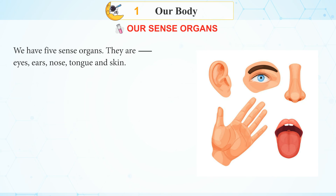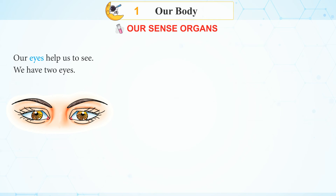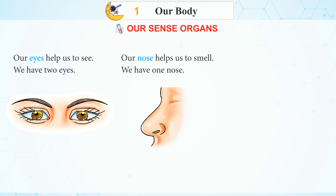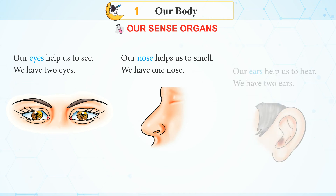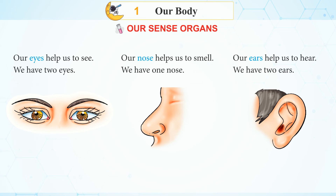We have five sense organs. They are eyes, ears, nose, tongue, and skin. Our eyes help us to see — we have two eyes. Our nose helps us to smell — we have one nose. Our ears help us to hear — we have two ears.